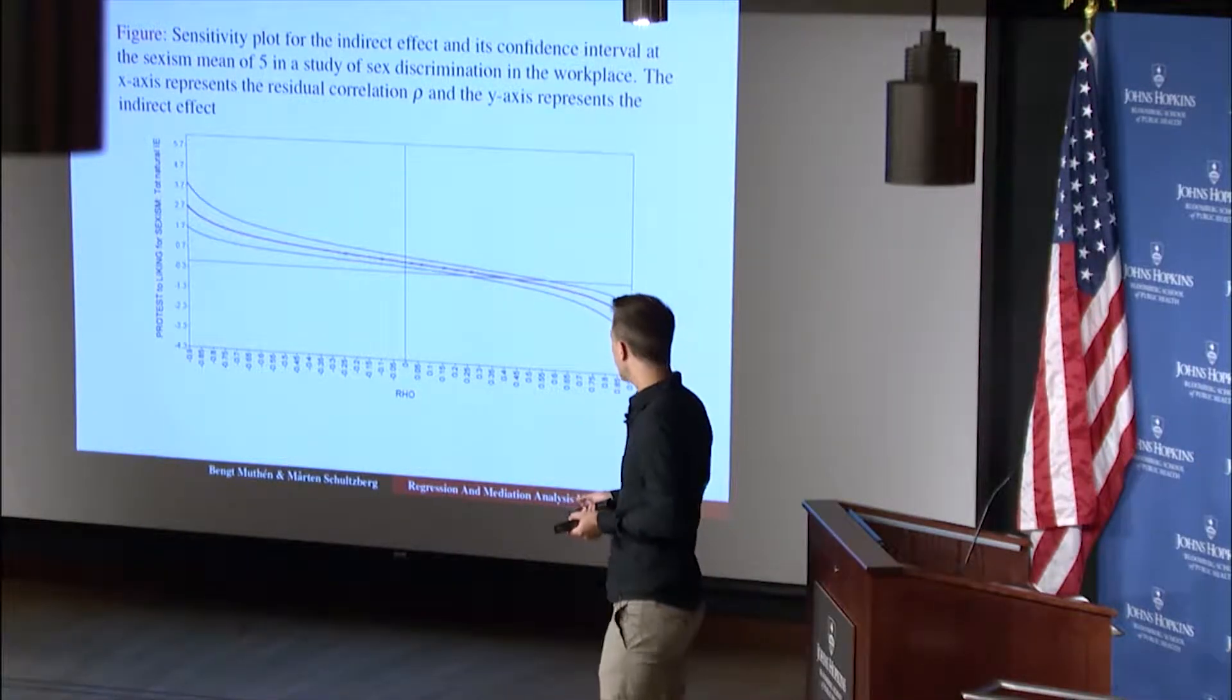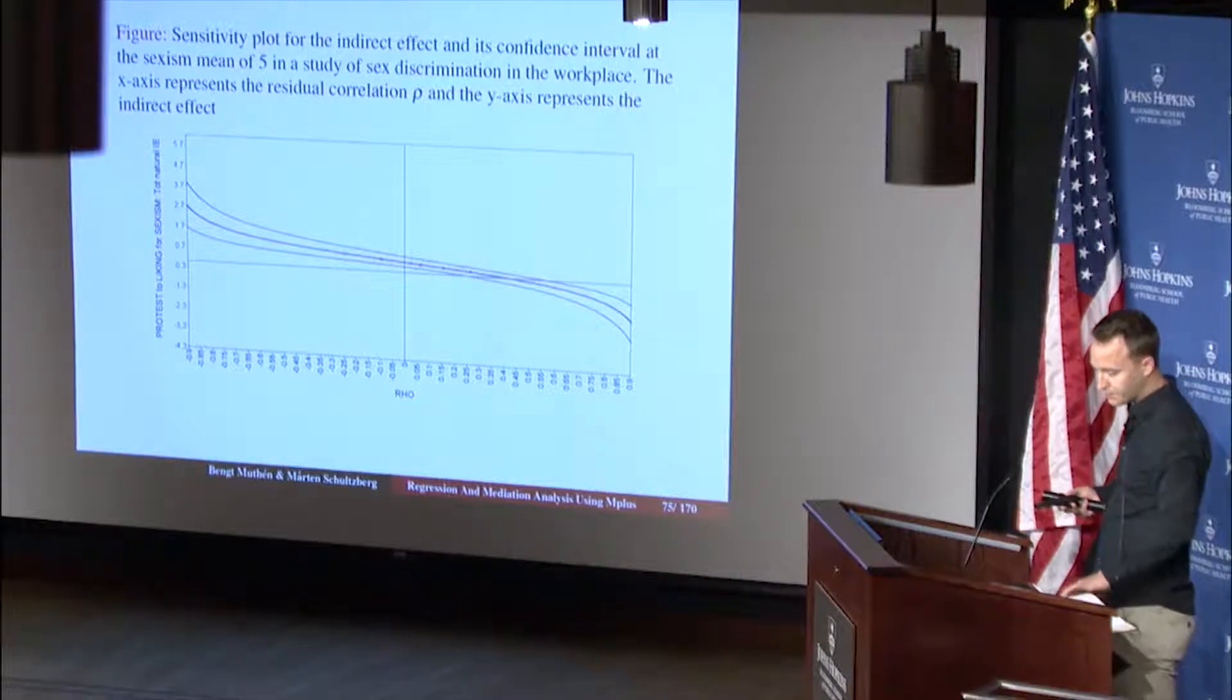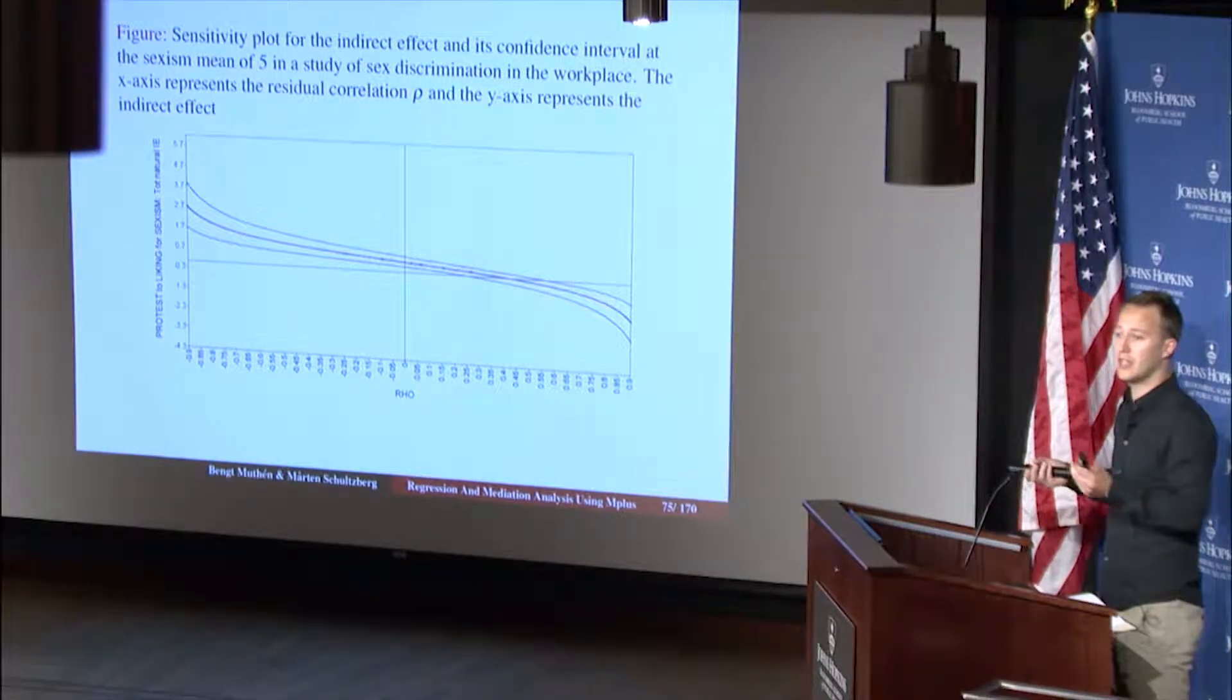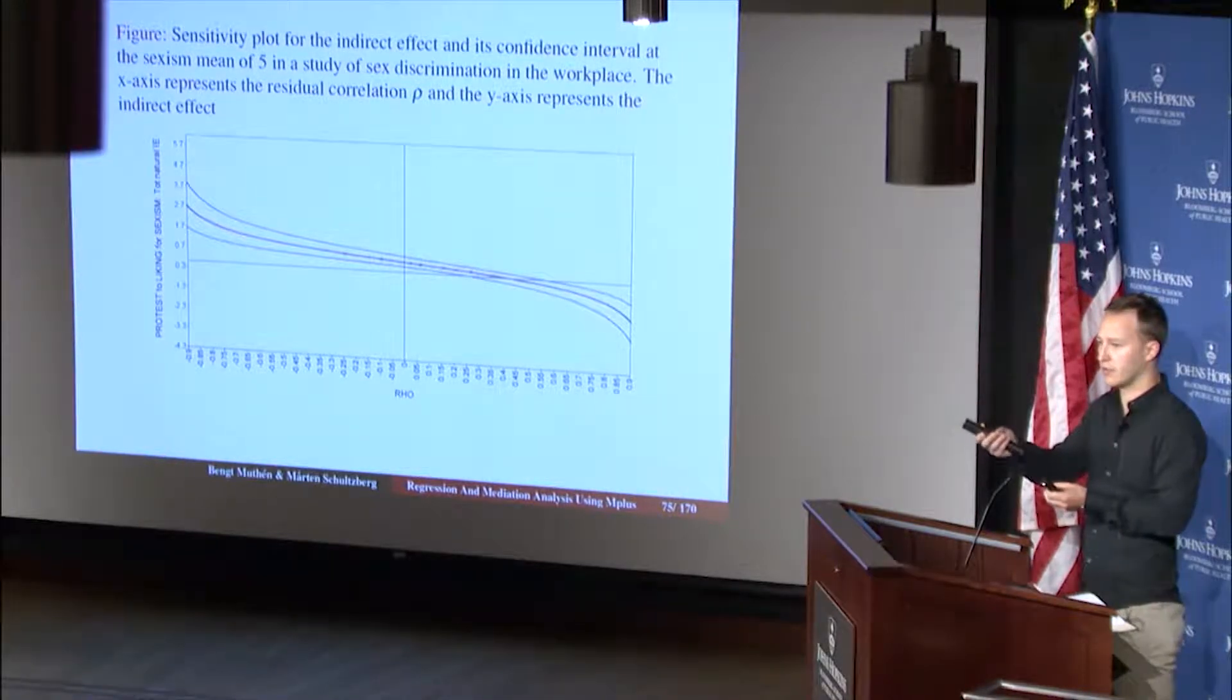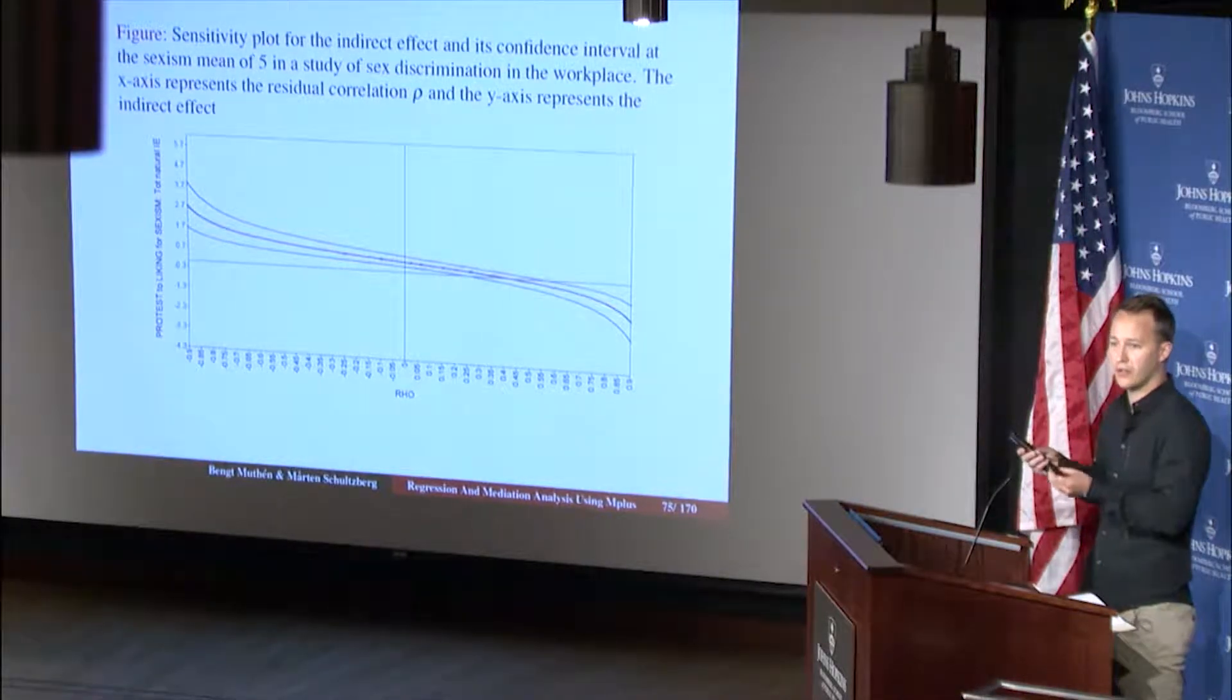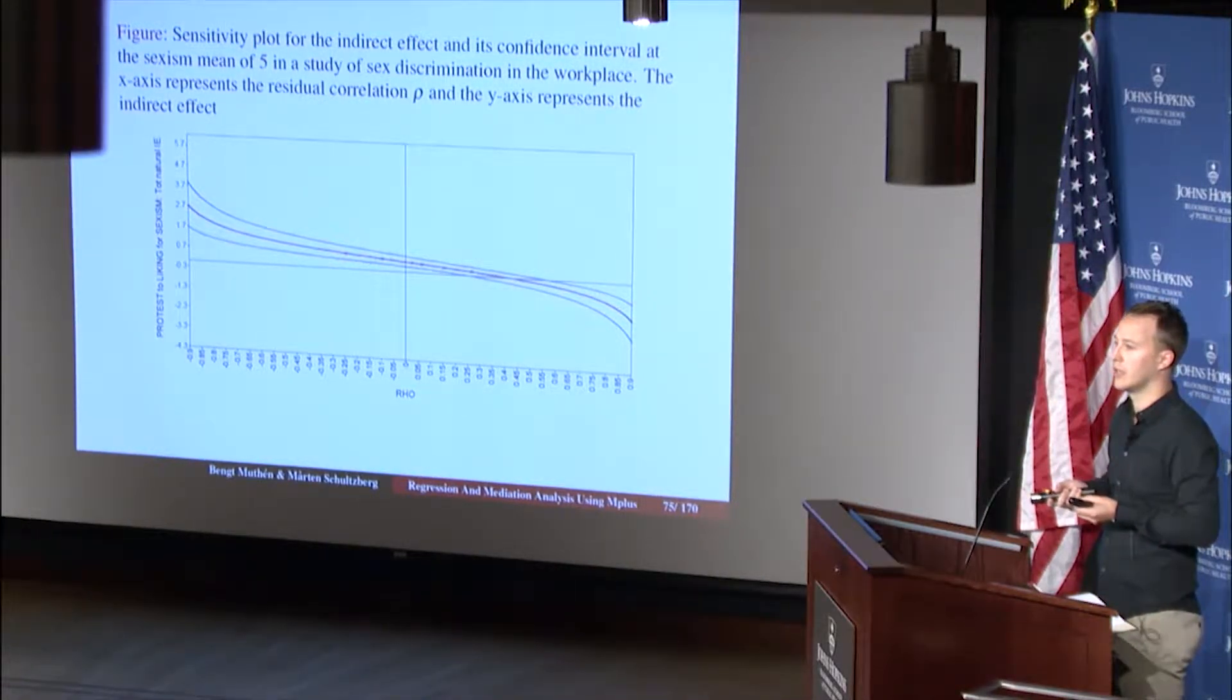All right. So if you just look at this plot and think about what we can see here. So essentially what Bengt said, the no confounder assumption, that is there is no variable that we didn't measure that affects both the mediator, which is the appropriateness of the response, and the outcome, which is the liking. We assume that there is no unmeasured confounder, no unmeasured variable that affects both of these. And I think that's probably not true.